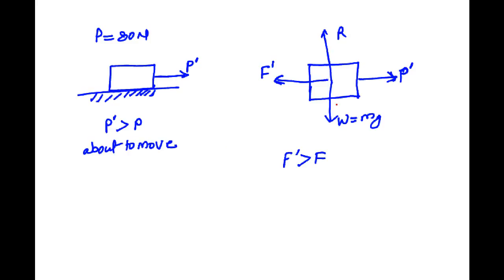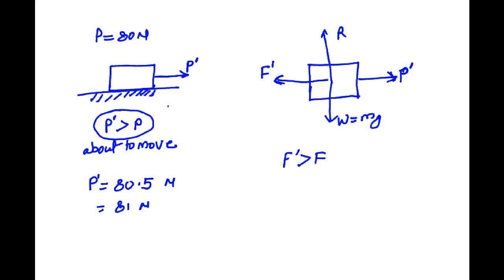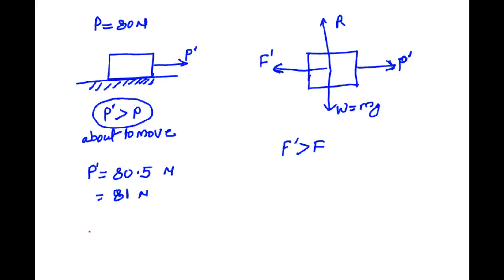Now if we increase the value of P dash beyond 80 N — say to 80.5 N or 81 N — the body will start to move. We can say a slightly larger force than 80 N is required to move the block from the about-to-move condition. If we increase P dash to 100 N, the body is in the moving condition.